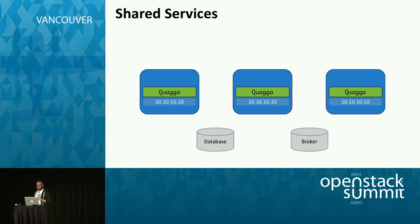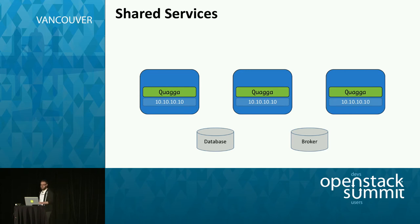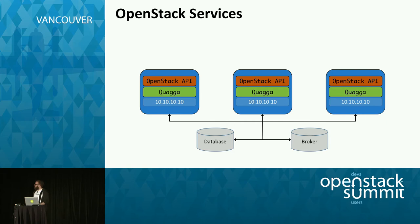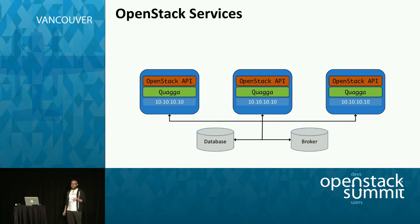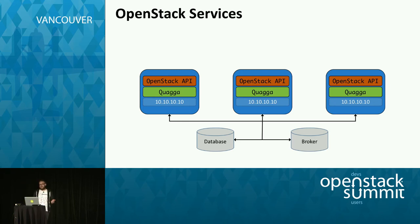Now we'll bring our shared services into the mix — generally a database and a message broker for OpenStack. Their configuration is outside the scope of this talk, but we're doing this in some automated fashion, potentially with Puppet. Once prerequisites are in place, we bring our OpenStack services in. Two specific things to call out: first, configure services to listen for requests inbound to our Anycast address, not the particular address of one node or another; and second, when configuring the Keystone service catalog, use the Anycast address or a DNS record associated with that address — not the individual node IPs.